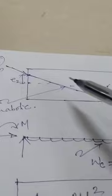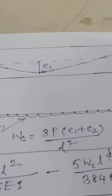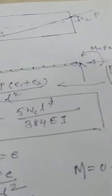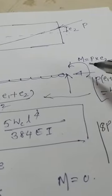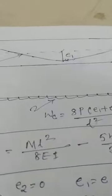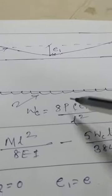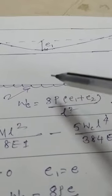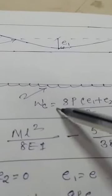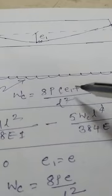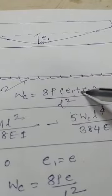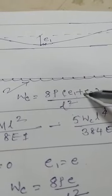The next cable profile is a parabolic or curved profile. Here, the eccentricity at the end is e2. Once eccentricity is there at the end, again a moment is created, similar to the previous case. Because of this curved shape, instead of a point load as in the triangular case, there is a creation of a UDL that is 8Pe/L², where e is the total eccentricity e1 plus e2.